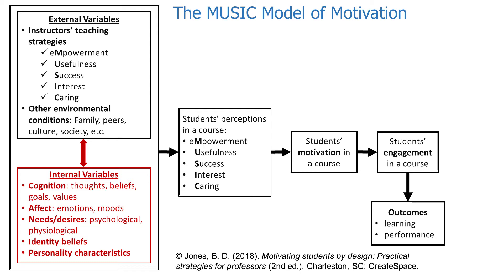These external factors interact with students' internal variables — those inside their head. For instance, cognition includes students' thoughts, beliefs, goals, and values. There are also other internal variables such as students' affect — their emotions and moods — as well as their psychological and physiological needs and desires. They also have beliefs about their identity: who they see themselves as now or becoming in the future. And students have their own personality characteristics; for example, some people are more extroverted, agreeable, or conscientious than others.